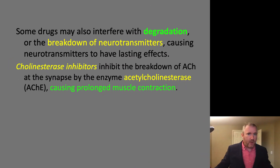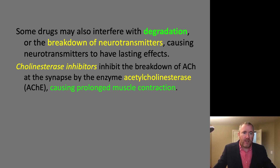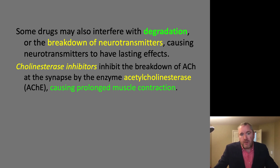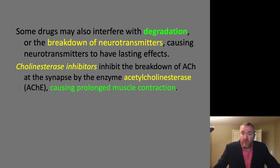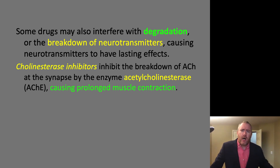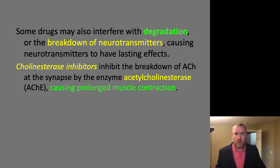Some drugs may also interfere with degradation or the breakdown of neurotransmitters, causing neurotransmitters to have lasting effects. One famous example is cholinesterase inhibitors, which inhibit the breakdown of acetylcholine at the synapse by preventing the enzyme acetylcholinesterase from breaking down acetylcholine, causing prolonged muscle contraction. This happens with mustard gas or sarin, and it can be countered pharmacologically — such drugs would be given to special ops forces to automatically counter some of the neuromuscular junction issues.